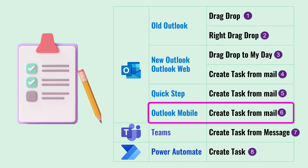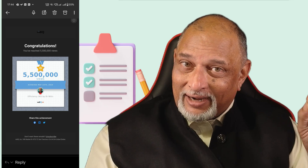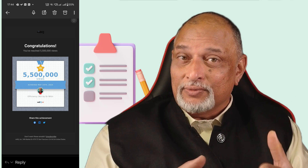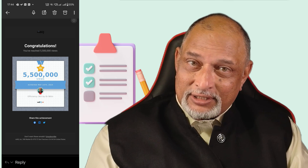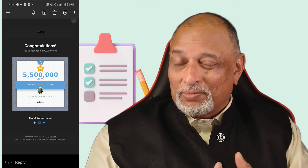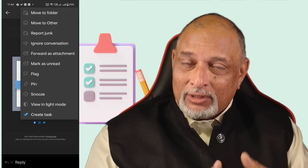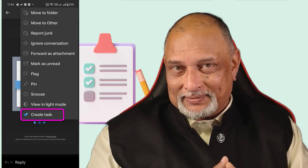On mobile, while you're reading the mail you may think, 'Oh, this is actually a task, so let's convert it.' Tap the vertical three dots in the top right — the ellipsis, more options — and all the way down, tap 'Create a Task.'